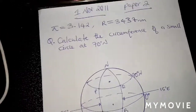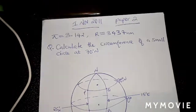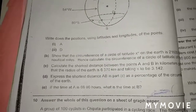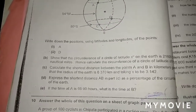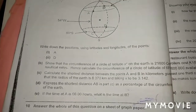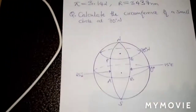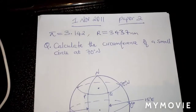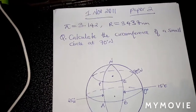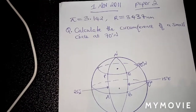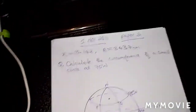They mostly ask this same question in two ways. About the circumference, they can ask you — let me get this pamphlet to show you something. Like here, let's focus on question B: it says, 'Show that the circumference of a circle of latitude X degrees on the earth is 21,600.' That's one way they can ask you to calculate the circumference under the topic of geometry, or they can ask you to calculate the circumference of a small circle.